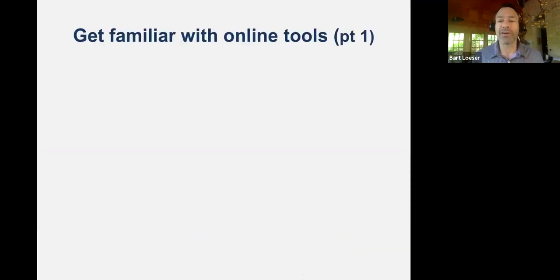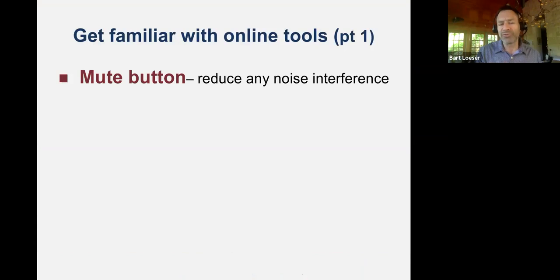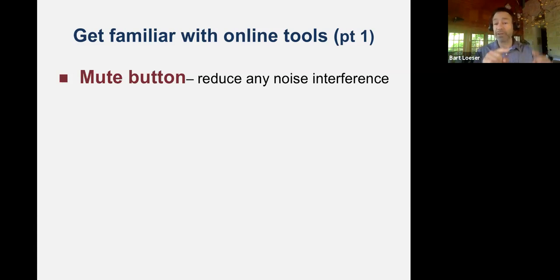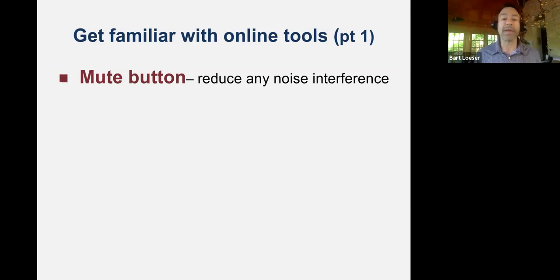We have a lot of tools on Zoom that we can use, so become familiar with them. One is the mute button — get very good at knowing where it is or what your shortcut is. Some people use Option+M to mute and unmute. That's important, because how many people have been in meetings when someone is already talking and doesn't realize you can't hear them? So if you know you're going to speak, unmute yourself very quickly. And when you're done, mute yourself — it also lets people know you're done speaking.